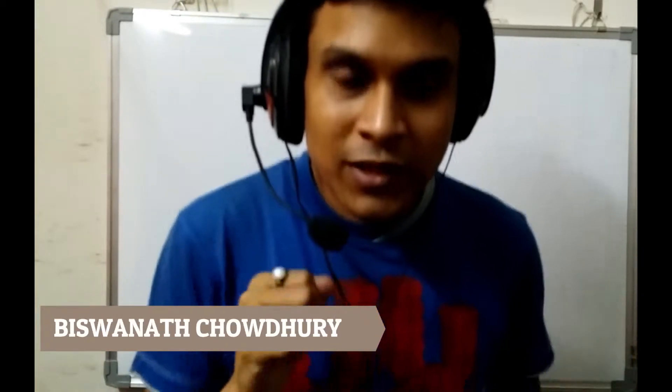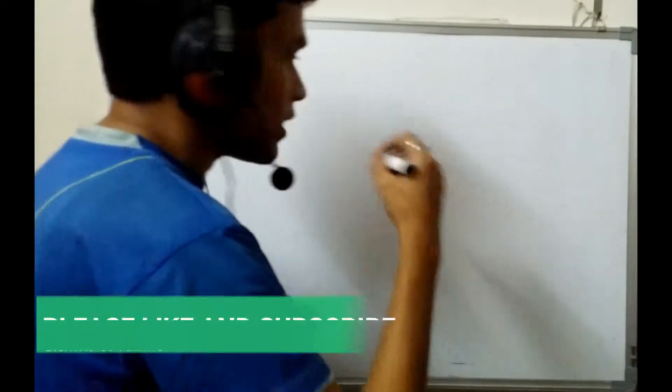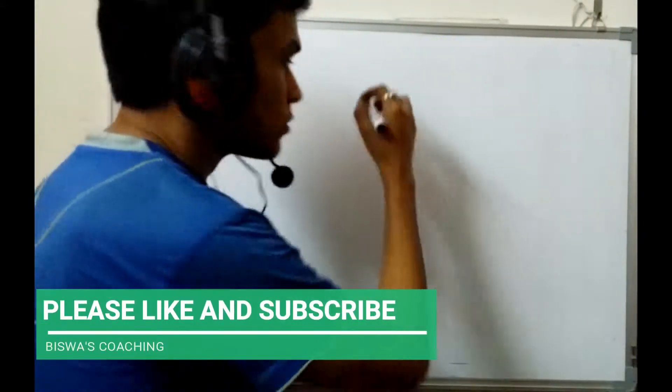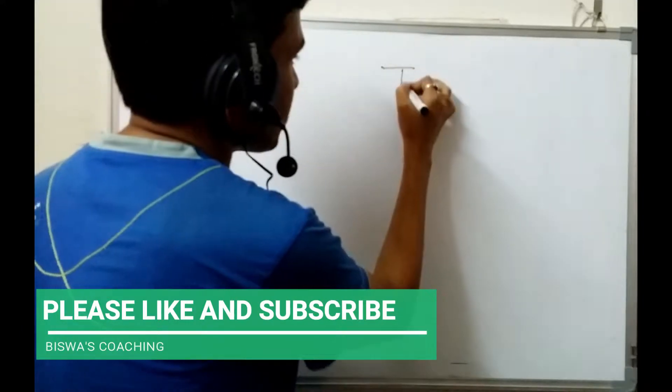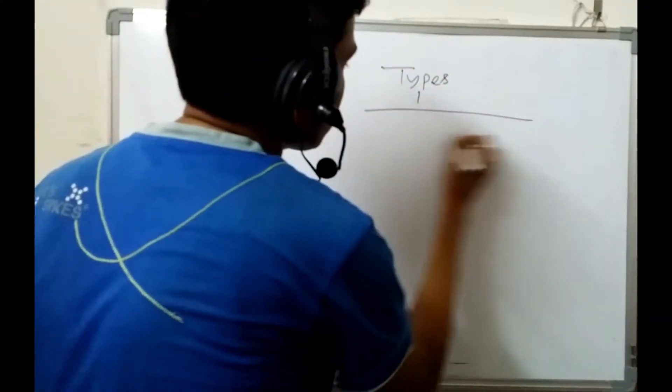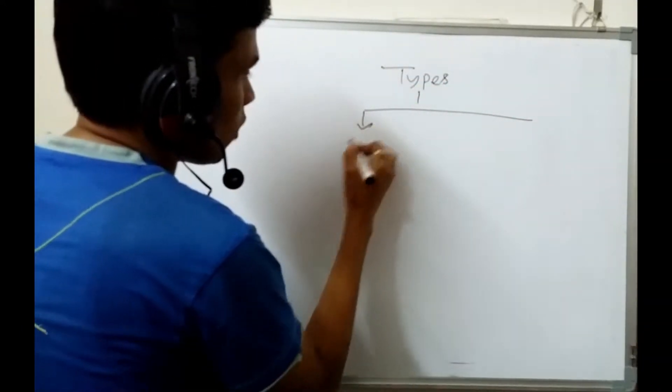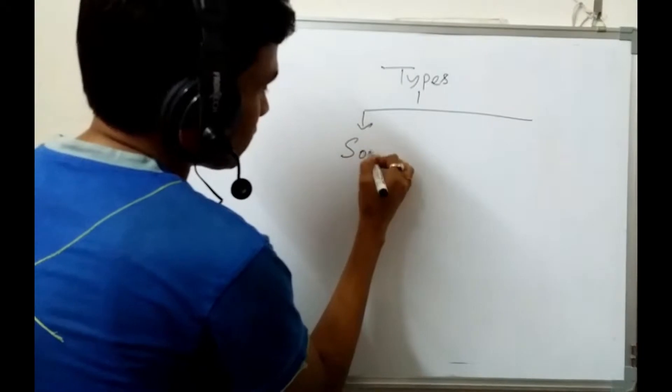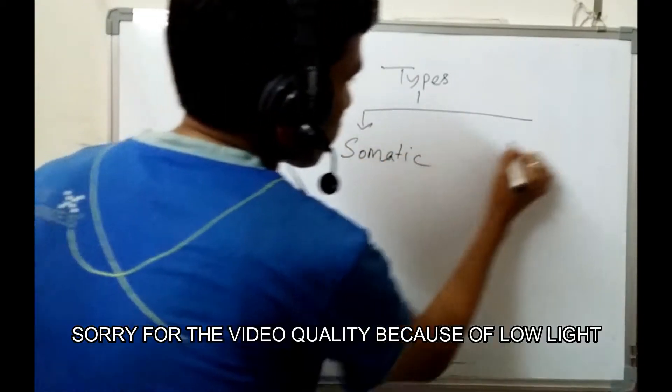Hello everyone, my name is Vishwan Choudhary, welcome to my channel. Today I am going to discuss about the types of body cells. There are two types: somatic cells and germ cells.